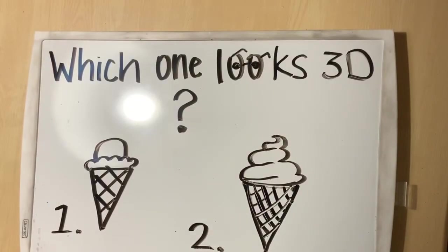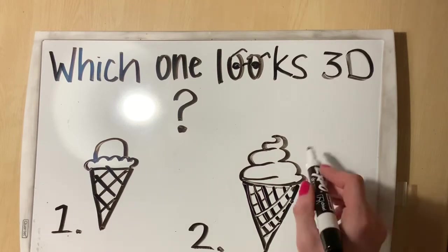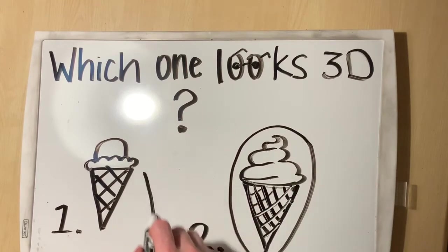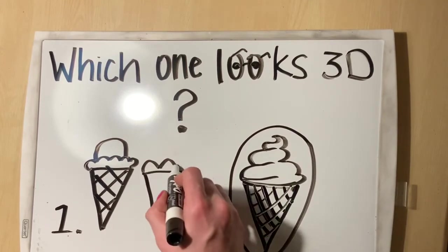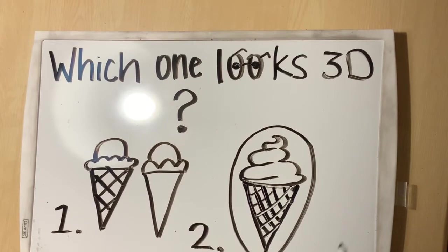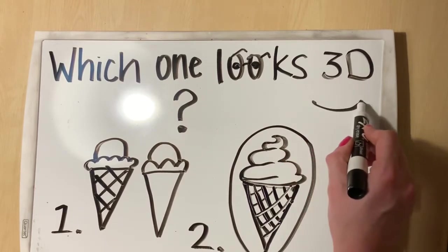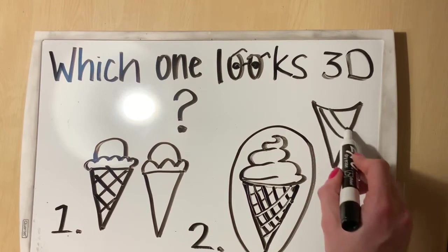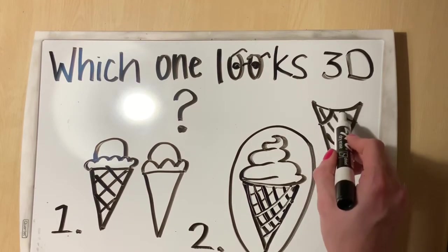Let's move on to ice cream cones. Which one looks 3D? Number one or two? Number two looks more 3D to me because in number one, again, it's just a bunch of straight lines. No nice curved lines. That's what we need to make a drawing look like a cone, which is another form.